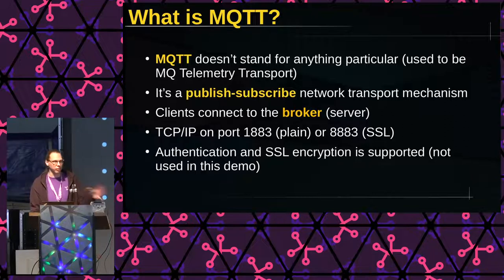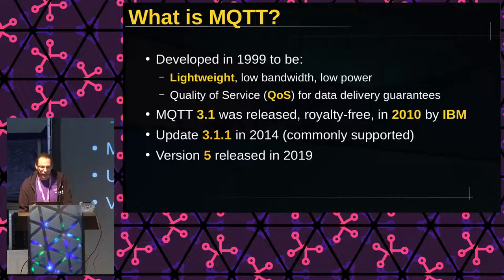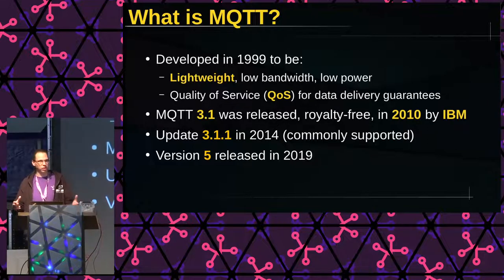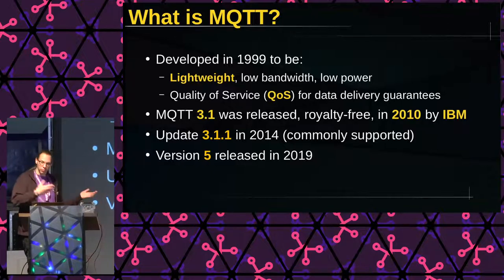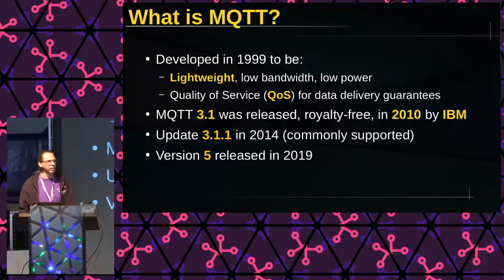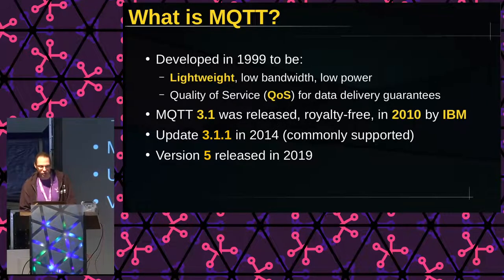There are authentication and SSL support options, but I'm not using them in this demo because that would be too complicated for this short time. It was developed by IBM and development started in 1999. It was an internal development for use in pipelines to communicate all the status information along the pipeline. It had to be lightweight, use very little power, very little CPU power and bandwidth, but it had to have some guarantees for data delivery. There is a QoS built in at three levels. In 2010, version 3.1 was released royalty free to the public.